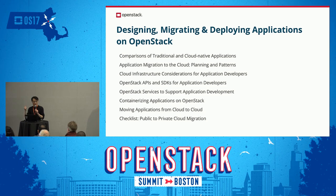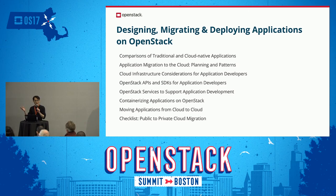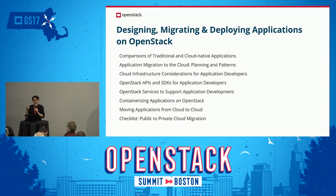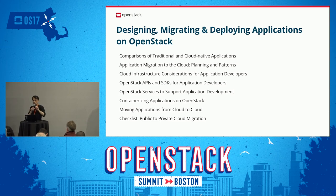We also talk about which OpenStack services can be used as part of your application development lifecycle. For example, if you need a database, in a conventional enterprise environment you'd have a separate database team spin it up. But in OpenStack there's Trove, database as a service. We also cover Heat orchestration — how you can provision your application environment. These features need to be provided by your ops or OpenStack infrastructure team to be made available.